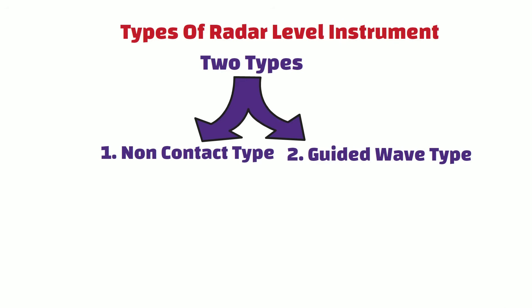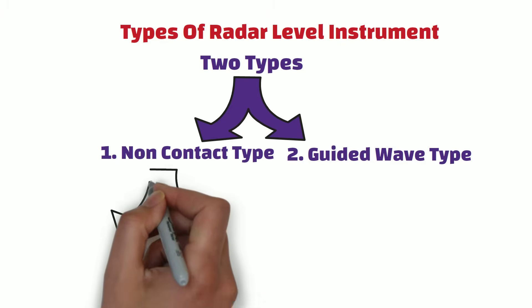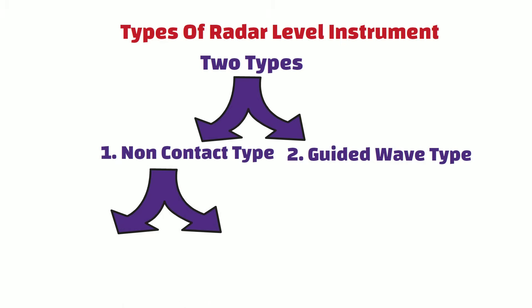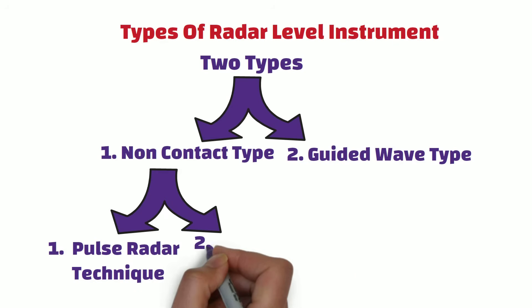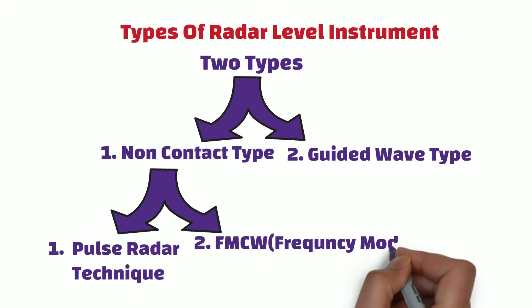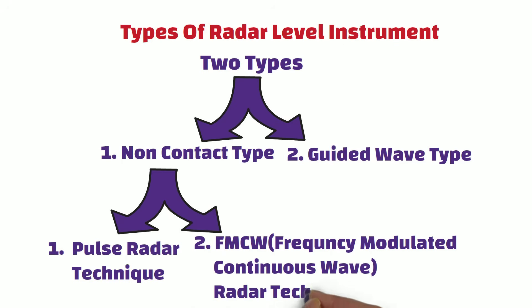Non-contact radar level measurement can be done using two different techniques. The first technique is the pulse radar technique, which we have already discussed in the first part of the video. The second technique is the frequency modulated continuous wave, or FMCW, radar technique.